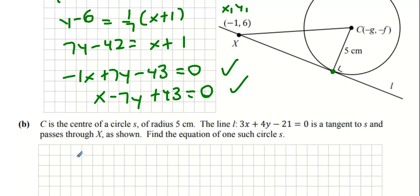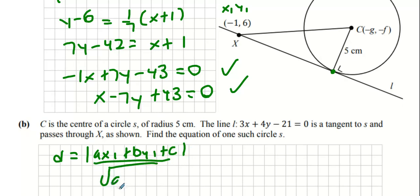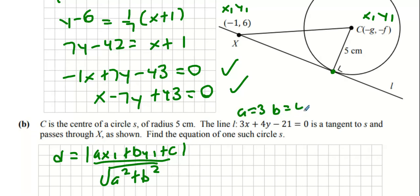I'm thinking we use the formula d equals the absolute value of (ax₁ plus by₁ plus c) all over the square root of a squared plus b squared. Here a is 3, b is 4, and c is minus 21, and we have an r value of 5. It seems like it ticks off a lot of boxes.